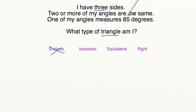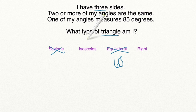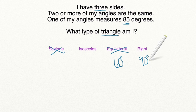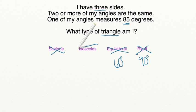One of my angles measures 85 degrees. If one of the angles is 85 degrees, that means it can't be an equilateral triangle, because equilateral triangles have to have all angles be 60 degrees. So that leaves us with an isosceles triangle and a right triangle. Now, if two of the angles are the same and one of the angles is 85 degrees, and we know a right triangle has to have at least one angle that's 90 degrees, that means we wouldn't be able to have 90 degrees plus two angles that are 85 degrees each, because that would be well over 180 degrees. So that means we have to cross out the right triangle, and that leaves us with an isosceles triangle.